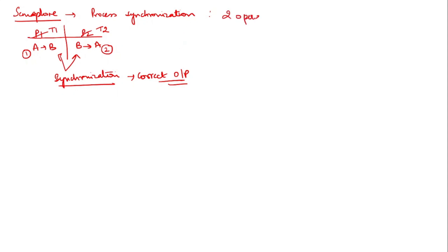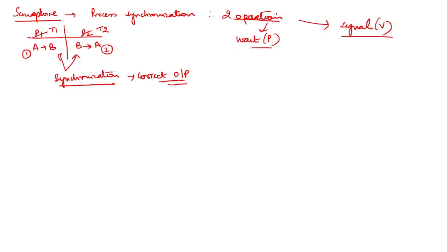Semaphores provide two operations: the wait operation, denoted by P, and the signal operation, denoted by V. These two operations help achieve synchronization. When we talk about synchronization, we achieve mutual exclusion between processes and there won't be any race conditions. You will be implementing the full functionality of these two operations.